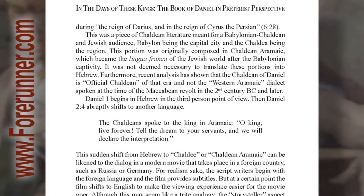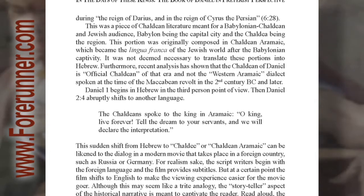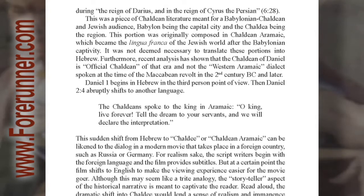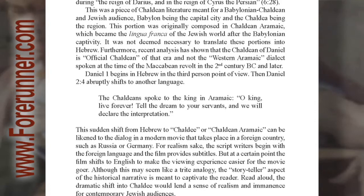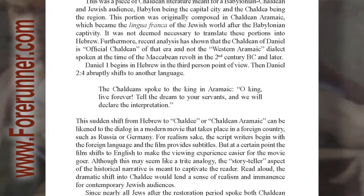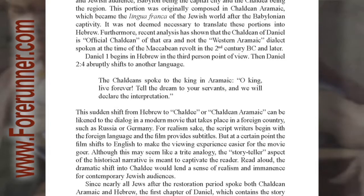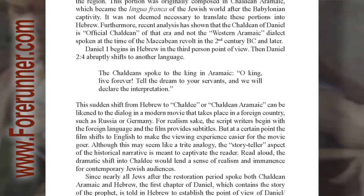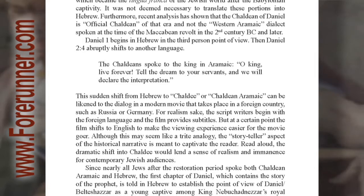This was a piece of Chaldean literature meant for a Babylonian, Chaldean, and Jewish audience — Babylon being the capital city and Chaldea being the region. This portion was originally composed in Chaldean Aramaic, which became the lingua franca of the Jewish world after the Babylonian captivity. It was not deemed necessary to translate these portions into Hebrew. Furthermore, recent analysis has shown that the Chaldean of Daniel is official Chaldean of that era and not the Western Aramaic dialect spoken at the time of the Maccabean Revolt in the 2nd century BC and later.